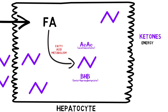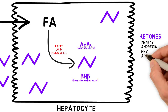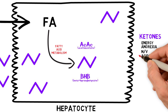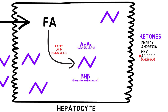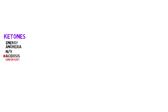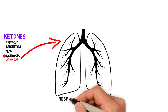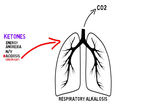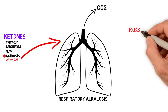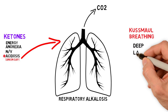Excess ketones suppress the appetite and may lead to nausea and vomiting. Ketones are also acidic, so as they accumulate, an anion gap metabolic acidosis develops. The body attempts to manage this acidosis with a compensatory respiratory alkalosis. In severe DKA, this progresses to the classic Kussmaul breathing pattern with deep, labored, gasping breaths.